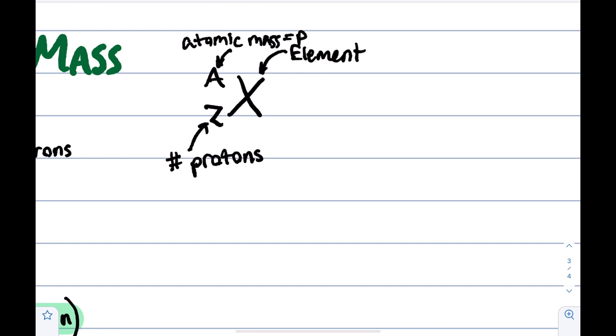So our atomic mass is equal, remember, to protons plus neutrons. So from this notation, if we have this whole thing, we can deduce how many neutrons we have, because we have protons, and we have protons plus neutrons, right? One-step algebra here.